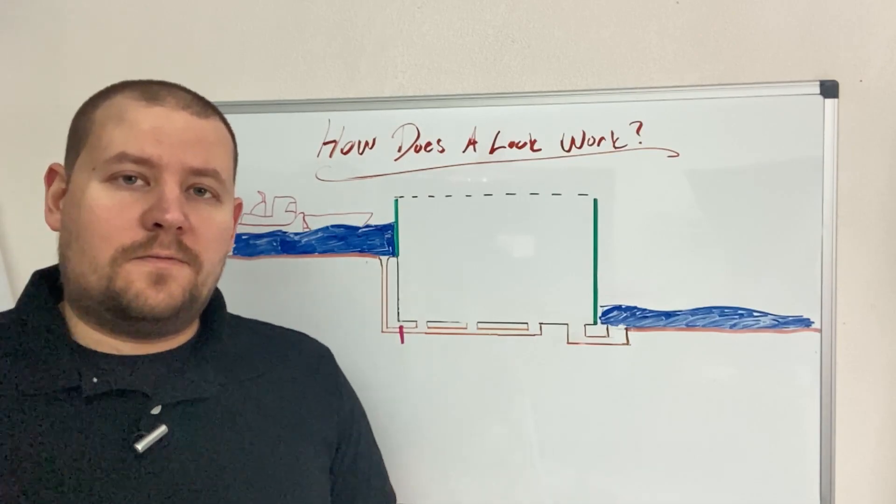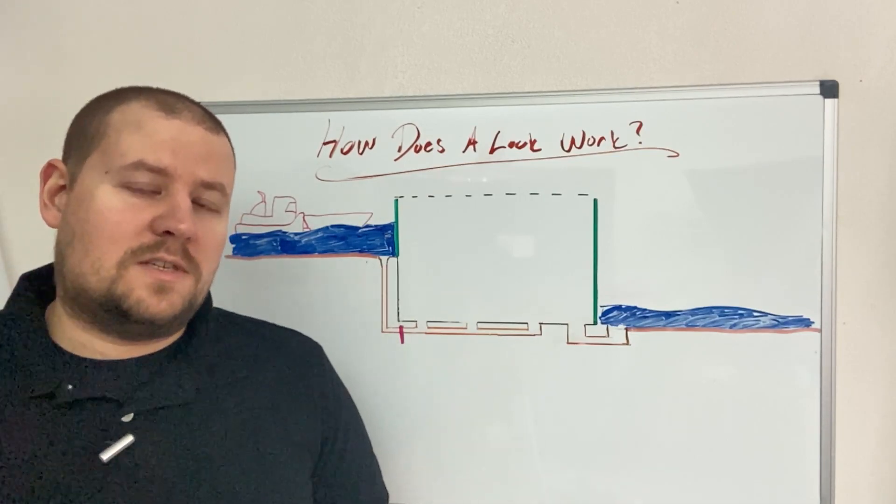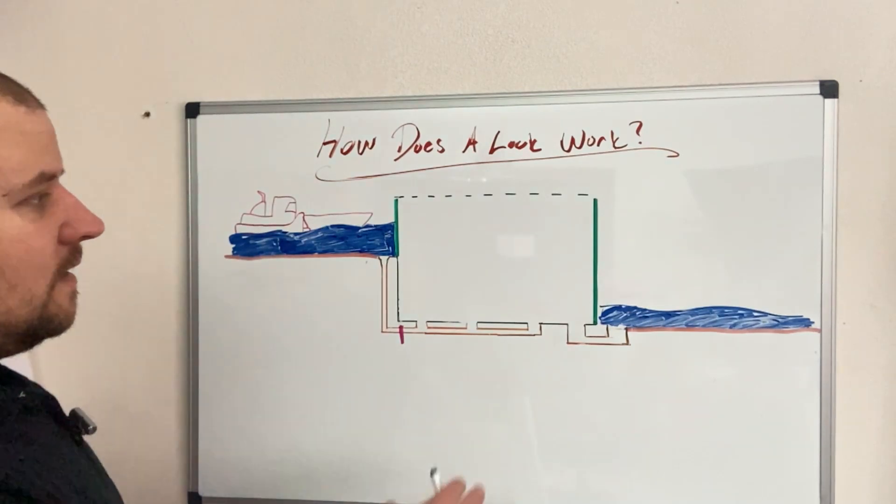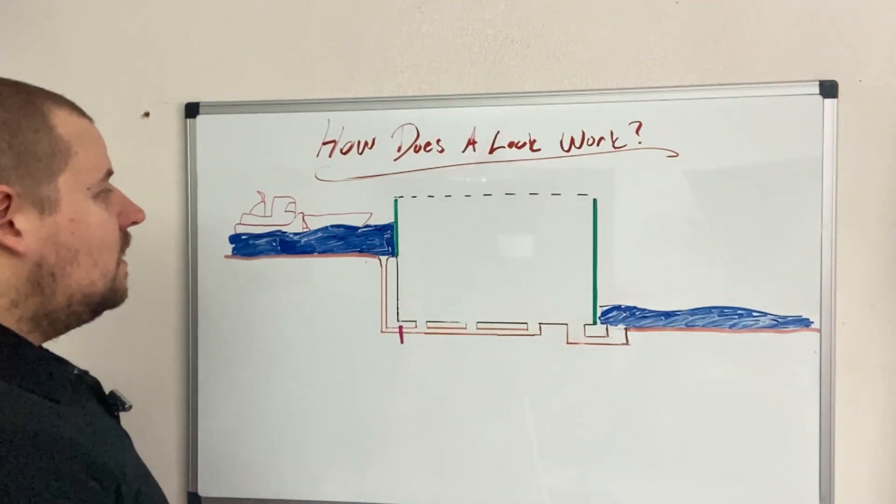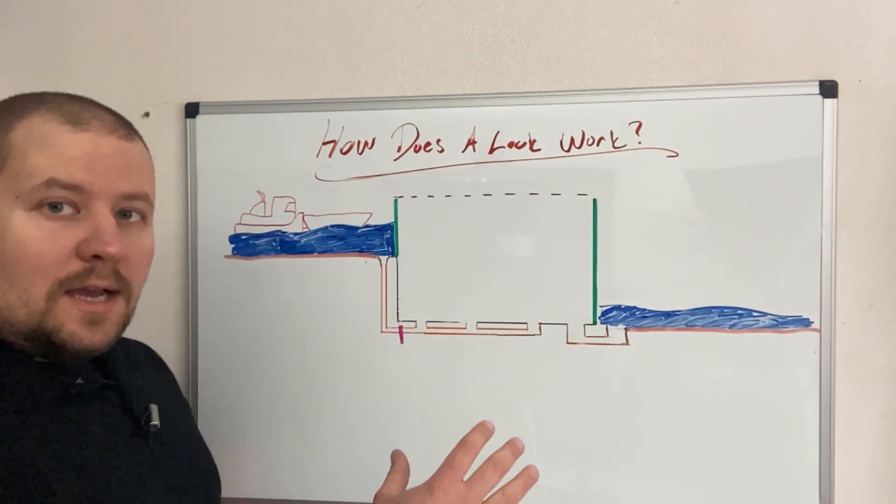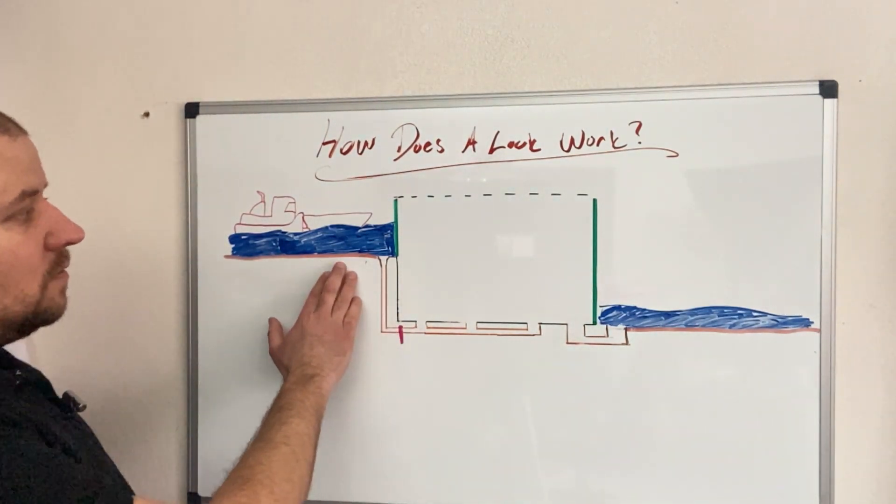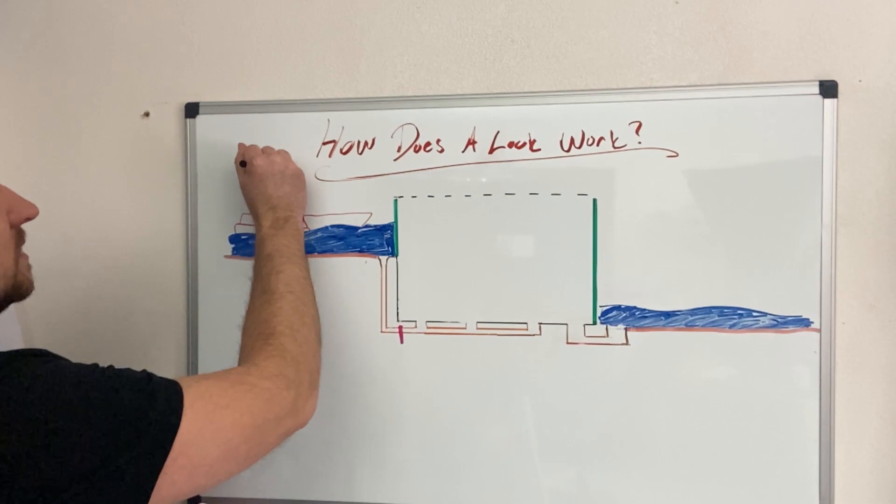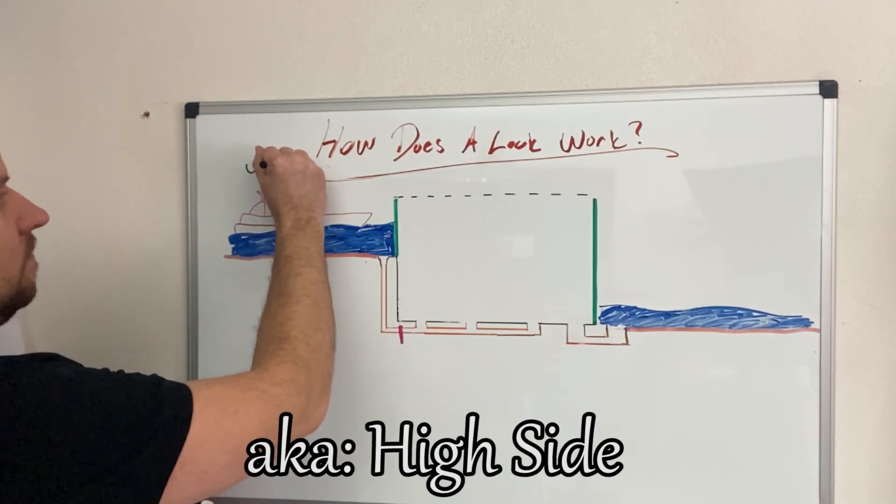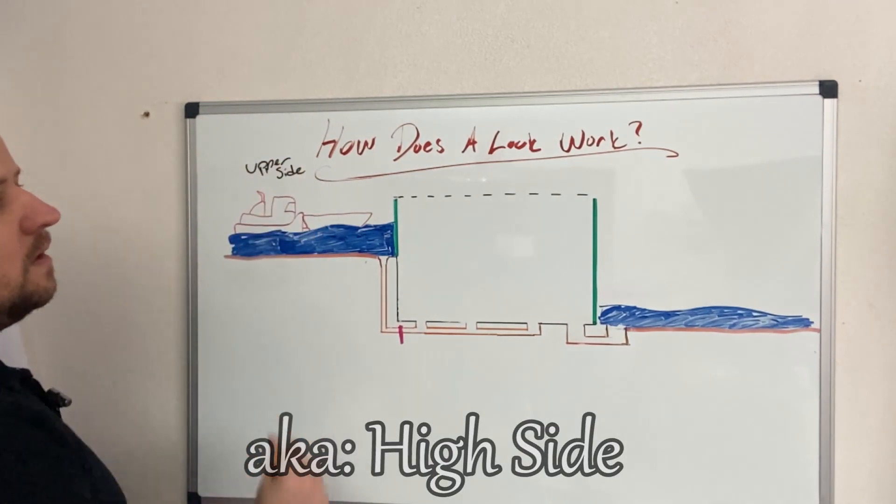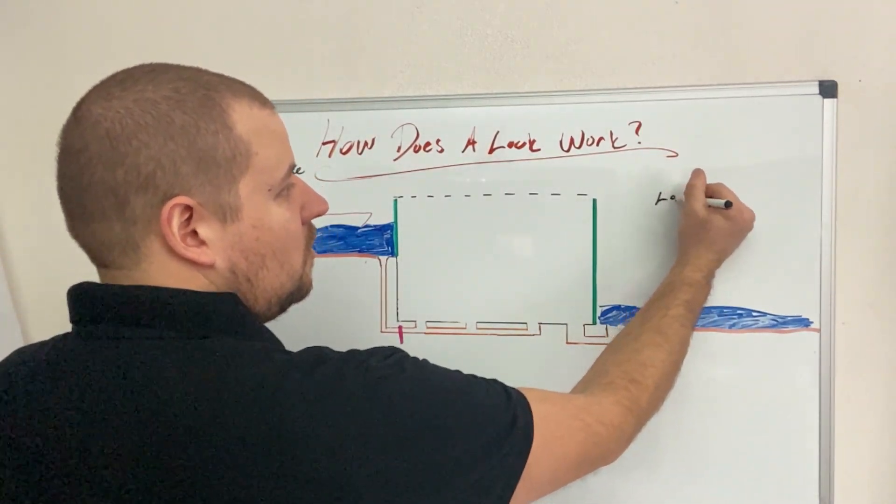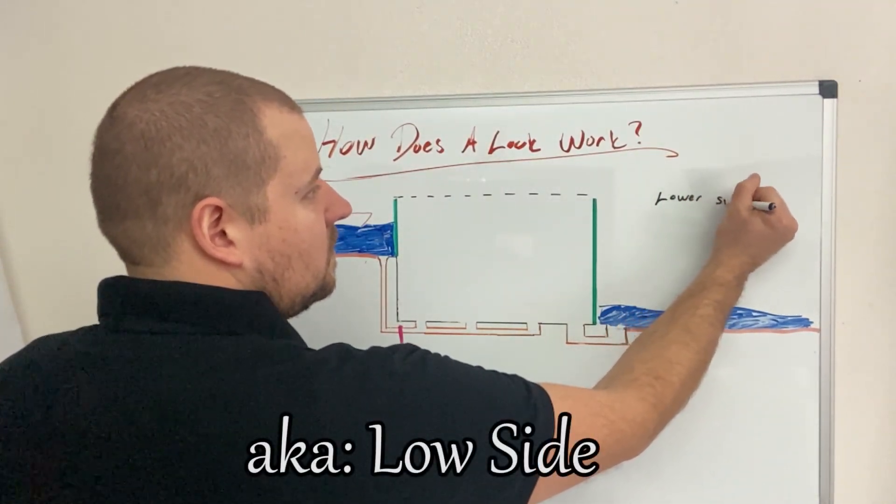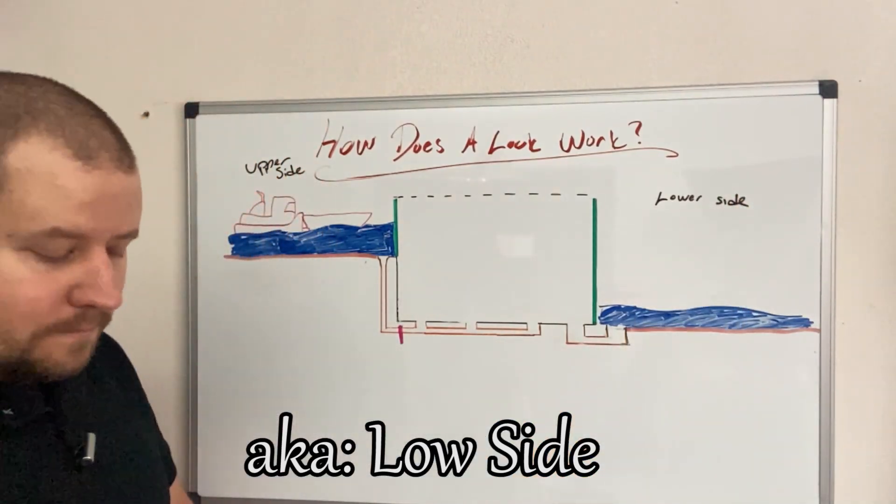Before we can understand how a lock works, let's get familiar with some of the names and terms associated with a lock. So here I have a cutaway drawing looking on a side view of a lock. Generally on a lock, water is higher on one side than the other. So we'll call this the upper side, and then the downriver side is generally lower, so we'll call this the lower side.